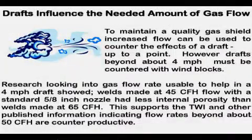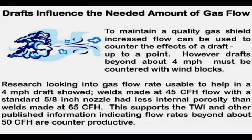Drafts affect the quality of gas shielding. Above about 4 miles per hour, a windbreak is needed. Many welders think they can just increase the gas flow; however, tests using 65 CFH to see if more wind could be tolerated than at 45 CFH showed more, not less, internal porosity. Beyond about 50 CFH, extra flow is counterproductive — air is just pulled into the gas stream due to shielding gas flow turbulence. A windbreak can be as simple as positioning your body or using a small portable windscreen.